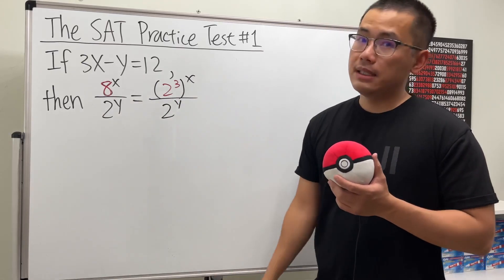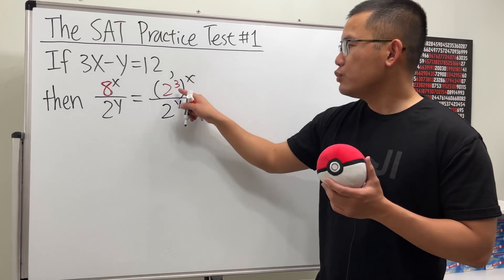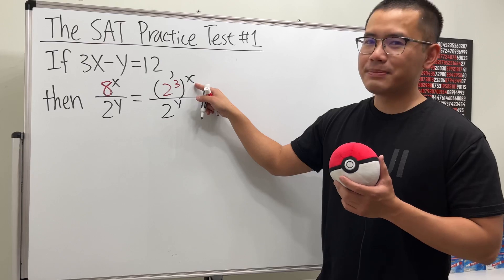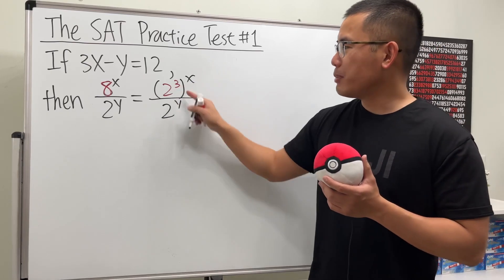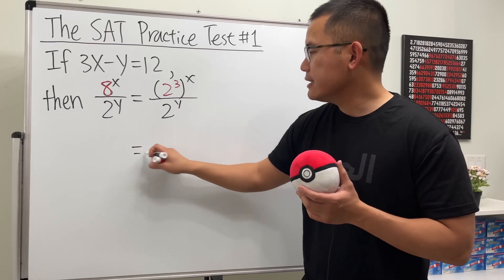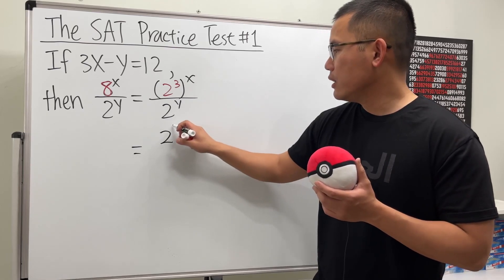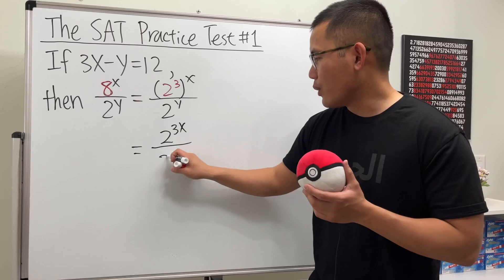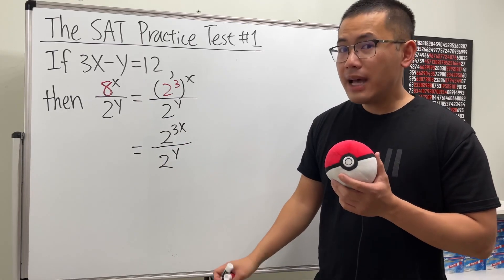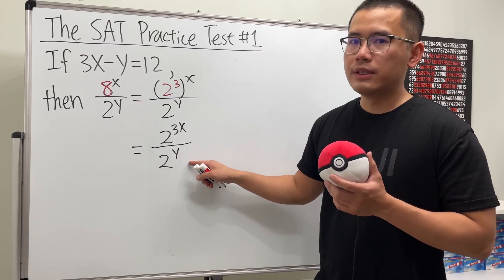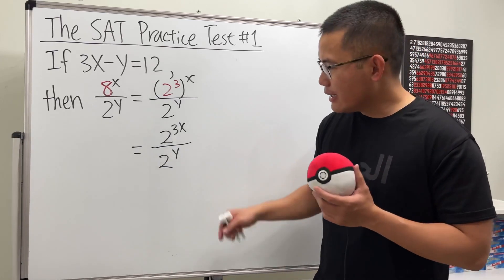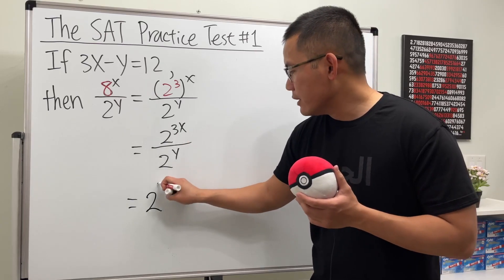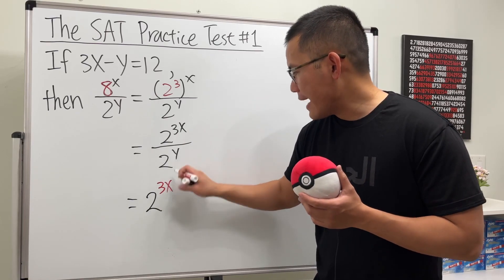Having the same base is the key for this question. We have 2 to the 3rd power raised to the x power — we can just multiply those exponents. So we get 2 to the 3x power, divided by 2 to the y power. Now they have the same base. What do we do with the exponents? We subtract. So this becomes 2 to the power of 3x minus y.